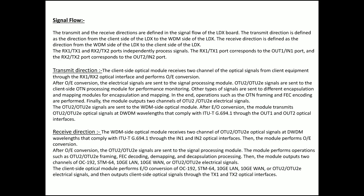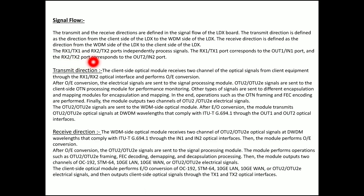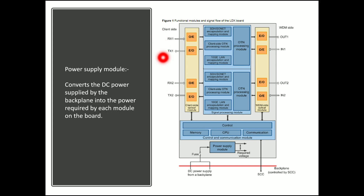Now let us look at the signal flow. The transmit and receive directions are defined in the signal flow of the LDX board. The transmit direction is defined as the direction from the client side of the LDX to the WDM side. The receive direction is the opposite — from the WDM side to the client side. The RX1/TX1 and RX2/TX2 ports independently process signals; RX1/TX1 corresponds to OUT1/IN1, and RX2/TX2 corresponds to OUT2/IN2.